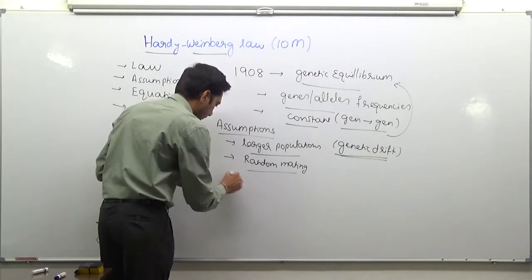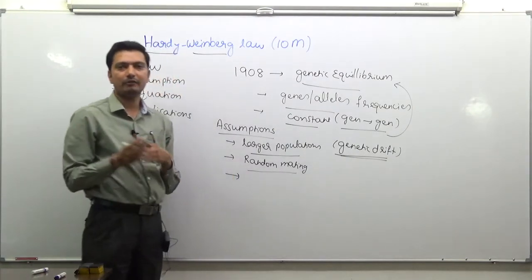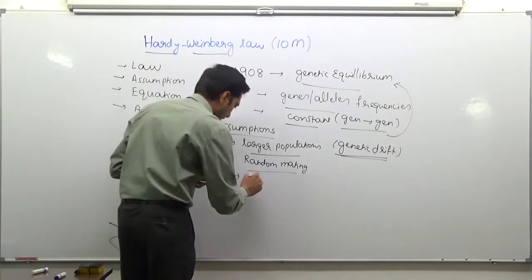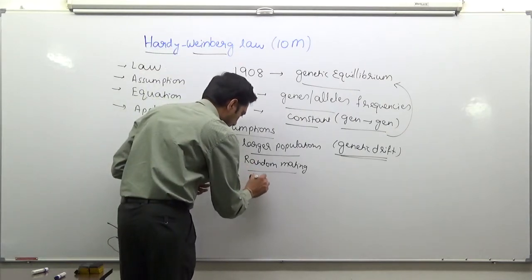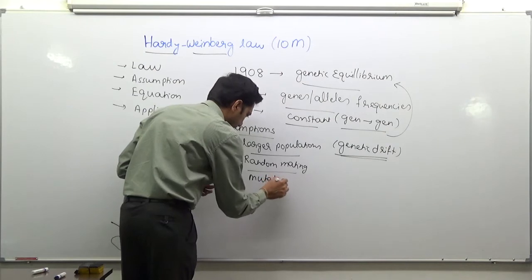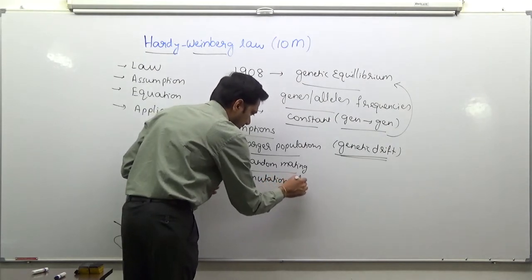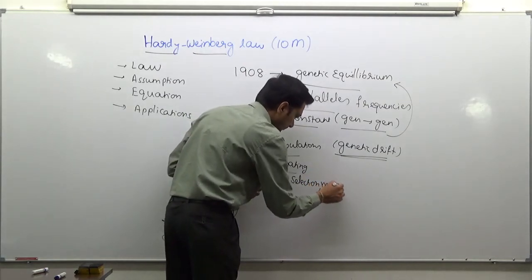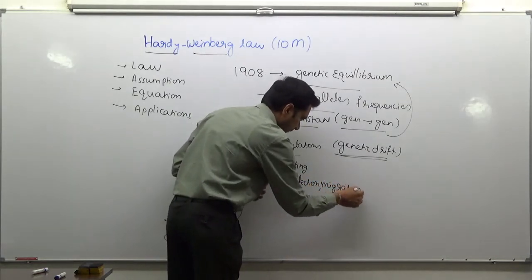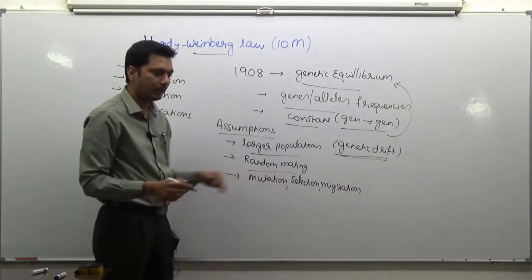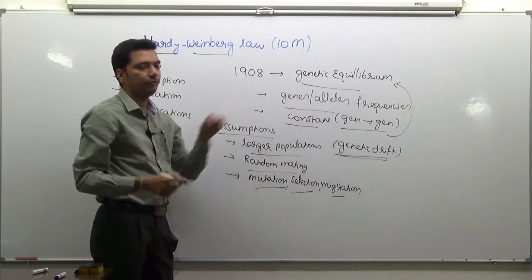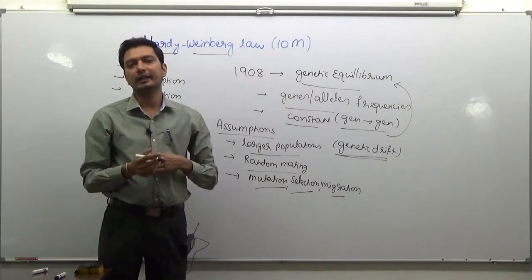And the third one, there should not be any evolutionary factors in specific, such as mutation, natural selection, and migration. If you have any of these operating, they will affect the frequencies of the alleles that we are looking at.